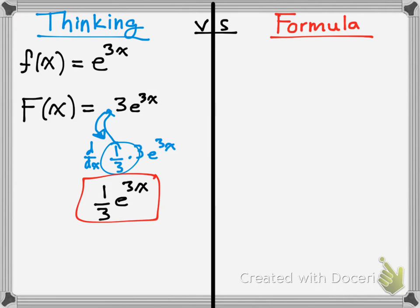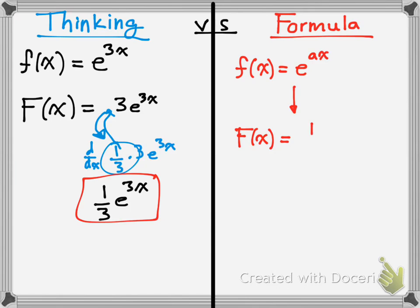If you want to go the formula route, you would write it as f of x equals e to the ax, where a is the constant. Then capital F of x, the antiderivative, is 1/a e to the ax — you take the constant, make it a fraction, and leave everything else the same. That's the formula you'd have to memorize for any e to the ax kind of function.